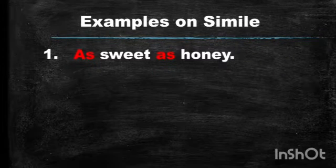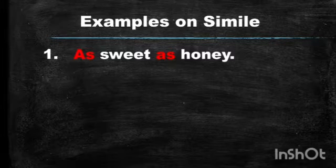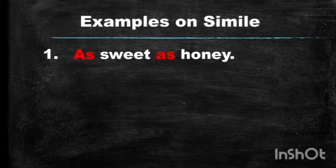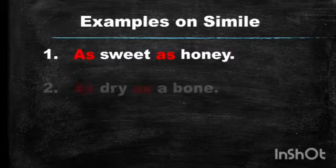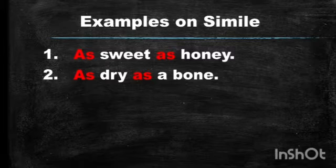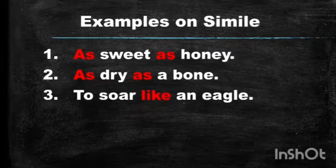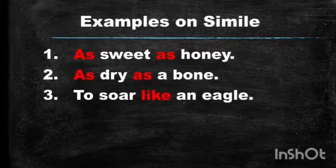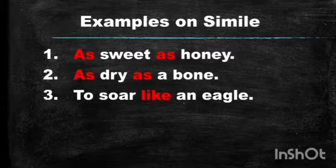The first example is 'as sweet as honey.' The word 'sweet' is compared to honey, and the word 'as' is used to compare. The second one is 'as dry as a bone.' The word 'dry' is compared to bone, and the word 'as' is used to compare these two things. The third is 'to soar like an eagle.' The soaring is compared to an eagle, and the word 'like' is used.